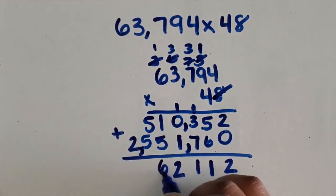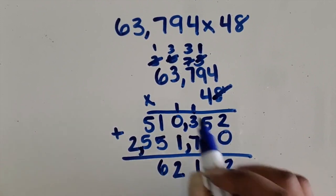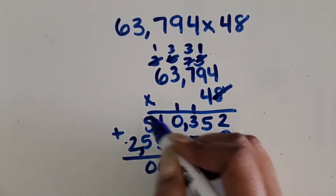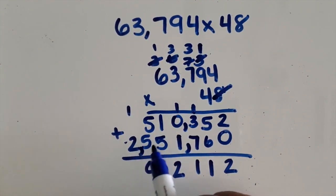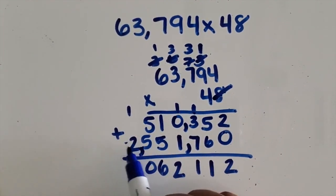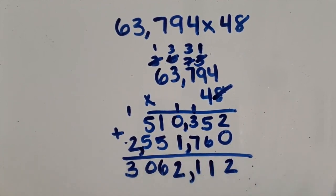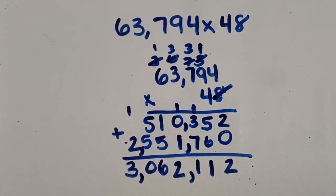10,000 is 6,000. 5 plus 5 is 10, regroup that as a million or regroup that 1 in the millions place. 2 plus 1 equals 3 million. Place the comma between the thousands and the hundreds place and a comma between the millions and the hundred thousands place.